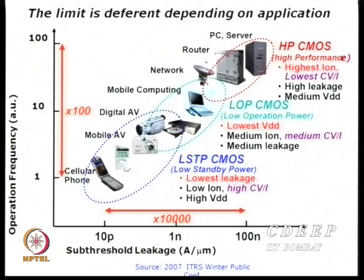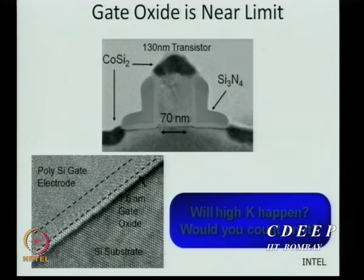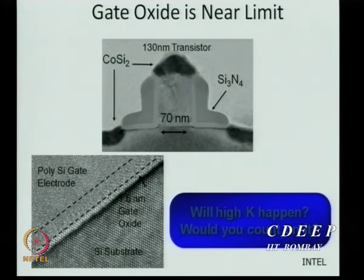Not every company enters every market because of cost constraints. Scaling down the oxide thickness of a MOS transistor also scales down, but by 22 nm and below, the required oxide thickness is less than 5 Ångströms — half a nanometer — which is about one atomic monolayer of silicon dioxide.